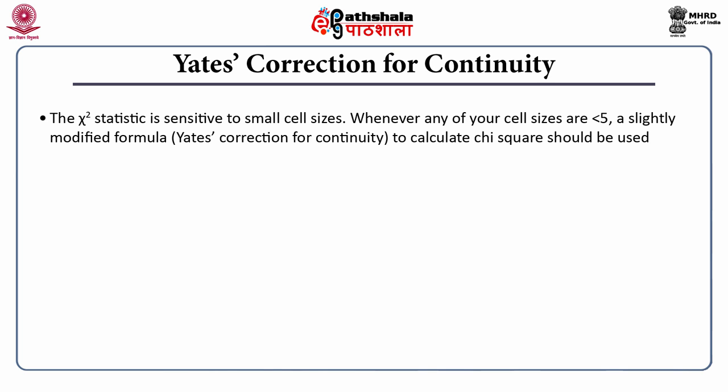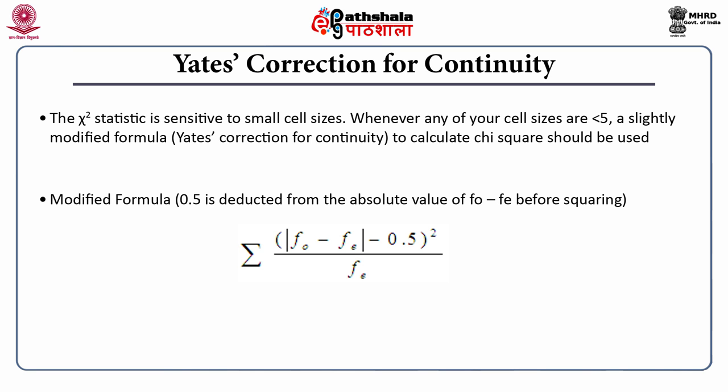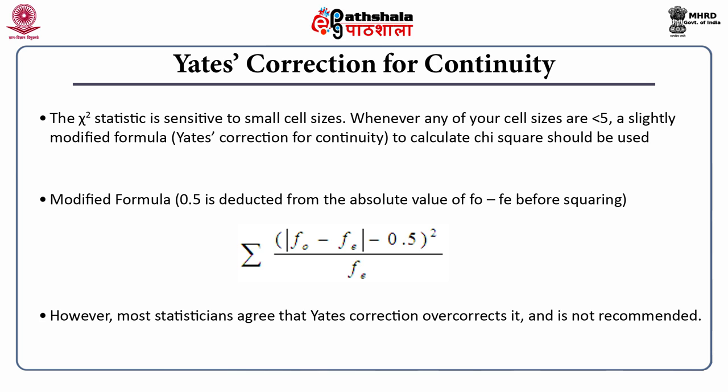The modified formula with Yates correction deducts 0.5 from the absolute value of FO minus FE before squaring it. So instead of the sum of (FO minus FE) squared divided by FE, it becomes the sum of (|FO minus FE| minus 0.5) squared divided by FE. However, you should note that most statisticians agree that Yates correction overcorrects and it is not recommended.